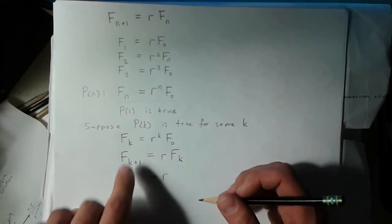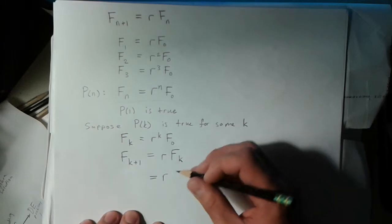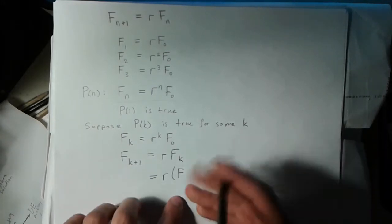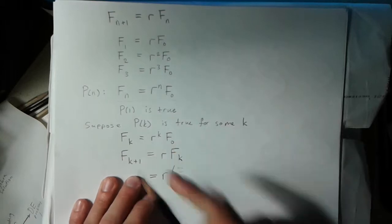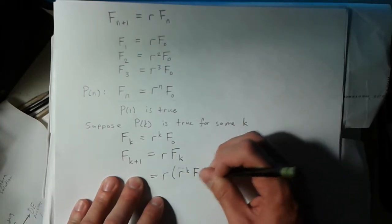We're supposing that the kth term equals r to the k times F_0, so I can just plug that in here. That's r to the k times F_0.